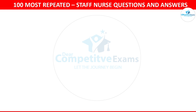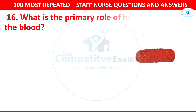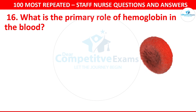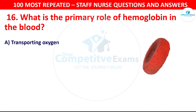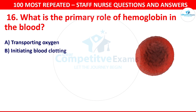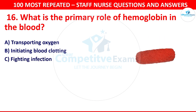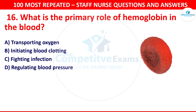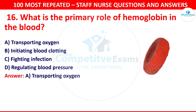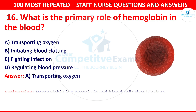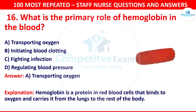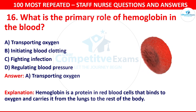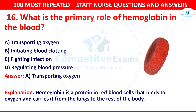Question 17. What is the primary role of hemoglobin in the blood? Your options are transporting oxygen, initiating blood clotting, fighting infections or regulating blood pressure. The correct answer is transporting oxygen. Hemoglobin is a protein in red blood cells that binds to oxygen and carries it from the lungs to the rest of the body.